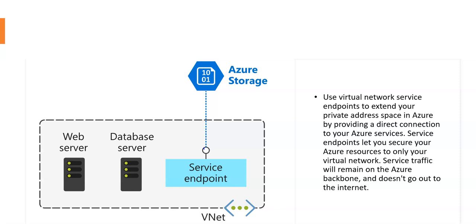Service endpoints let you secure your Azure resources to only your virtual network. Service traffic will remain on the Azure backbone and doesn't go out to the internet. For example, if you're trying to access Azure storage through the service endpoint, the traffic will route only between the Azure services and will not go out.